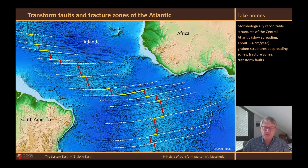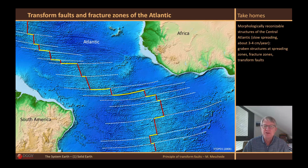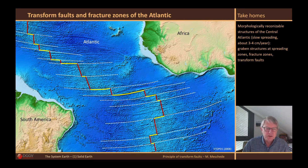The fracture zones are also very clearly defined here and, as in the Pacific, they also occur in prolongation of the transform faults. But here in the South Atlantic you can see something else very clearly: the lengths of the transform faults remain constant from the beginning of the opening and do not change after the ocean opens, at least if you look at transform faults that connect segments of a mid-oceanic ridge. There are also other situations in which the length of the transform fault changes, but I'll come to those later.